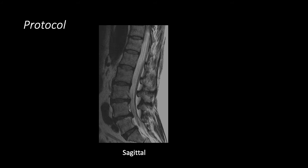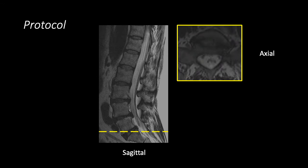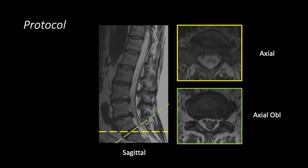A typical lumbar spine MRI protocol will have sagittal images — a series of images oriented as if we were looking at a person from the left — a stack of axial images oriented along the long axis of the sagittal images as if we were looking at a patient from the top of their head or the bottom of their feet, and in some cases, an additional series of axial oblique images will be performed through the lower lumbar discs to better show the disc morphology.